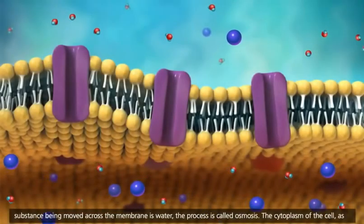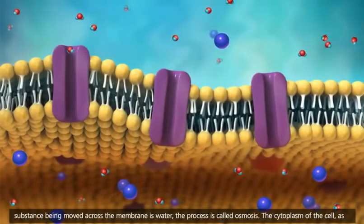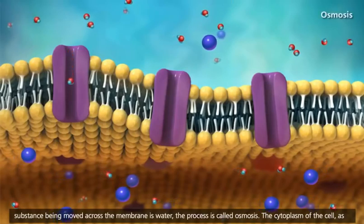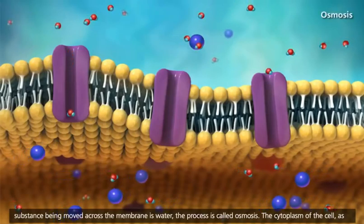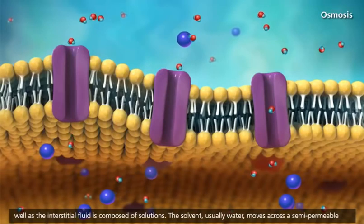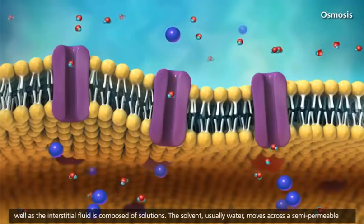When the substance being moved across the membrane is water, the process is called osmosis. The cytoplasm of the cell, as well as the interstitial fluid, is composed of solutions.